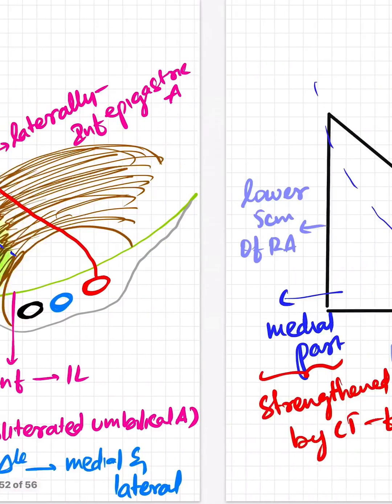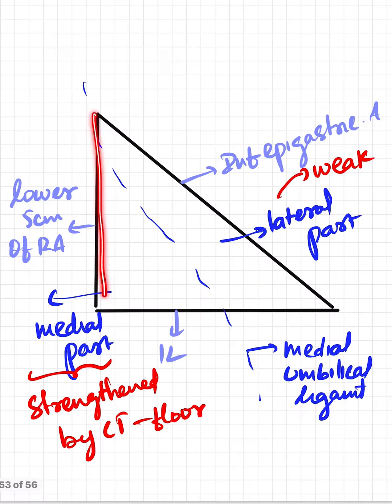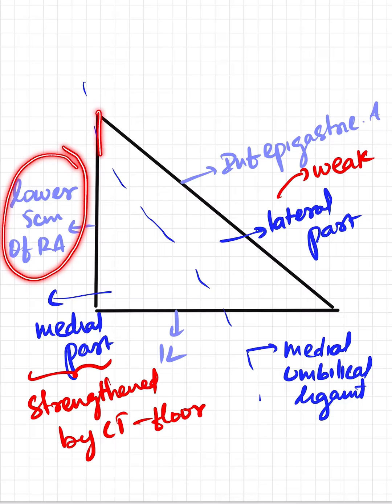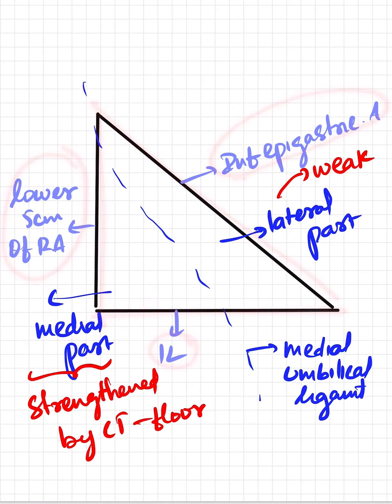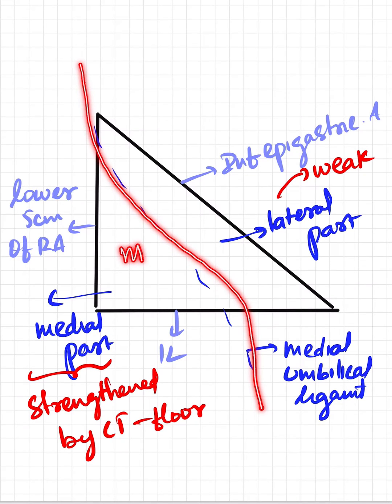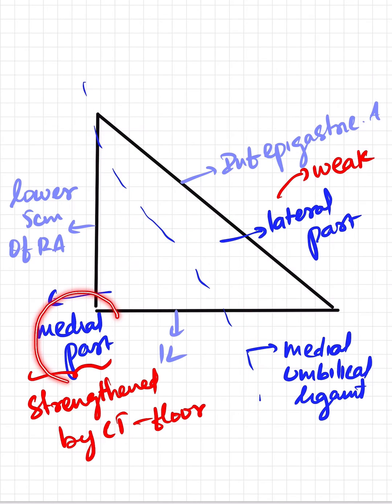If you see a convenient diagram like a triangle: lower 5 centimeters of the rectus abdominis muscle medially, laterally formed by the inferior epigastric artery, and the bottom formed by the inguinal ligament. The medial umbilical ligament divides it into medial and lateral parts.